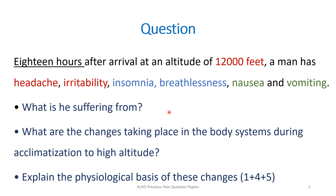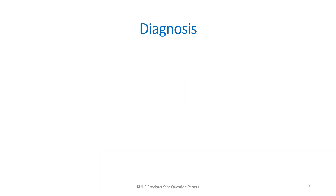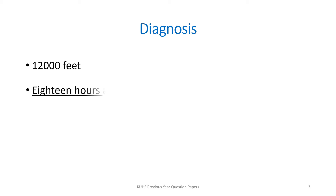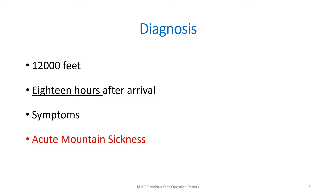For the first question it was one mark, for the second question four marks, and for the third question five marks. The first question was: what is he suffering from? Or in other words, what is your diagnosis? From the question itself, we can say that the person was at an altitude of 12,000 feet, which means he was at a high altitude. The symptoms appeared 18 hours after arrival. The symptoms were nausea, vomiting, insomnia, restlessness, irritability, and headache — all these point to the diagnosis: acute mountain sickness.